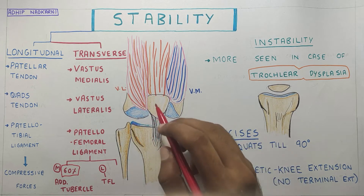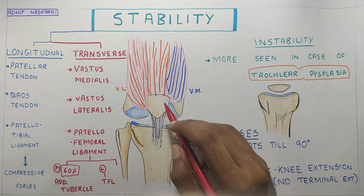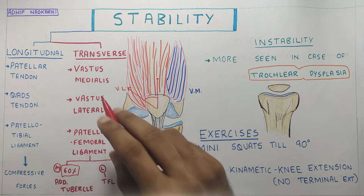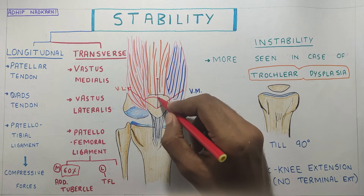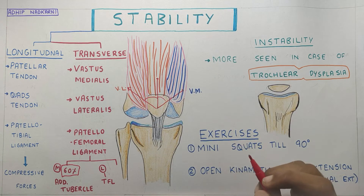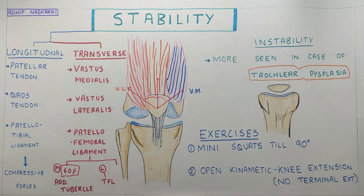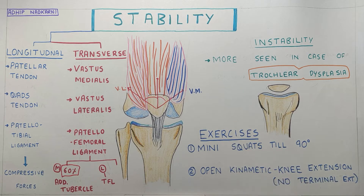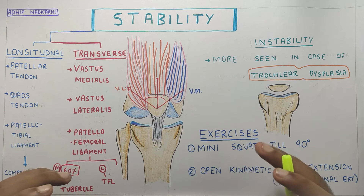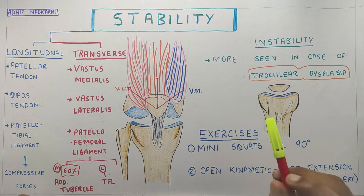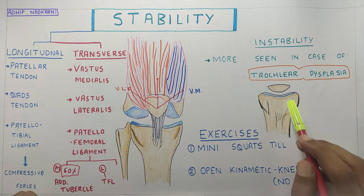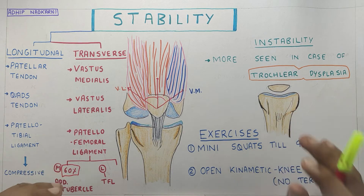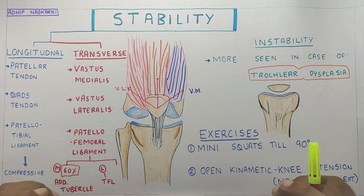The vastus medialis has two parts: vastus medialis obliquus (VMO) and vastus medialis longus (VML). VMO has around 50 to 55 degrees of pull on the patella on the medial aspect, whereas VML has 15 to 18 degrees. Strengthening the vastus medialis through neuromuscular re-education and electrical stimulation can provide a lot of stability to the patella. Instability is mainly seen in trochlear dysplasia — failure in development of the patellofemoral joint tissue where the patellar groove is very shallow — and Q angle also plays a major role.